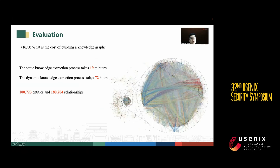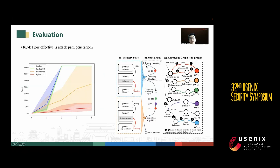Next, we measured the cost of knowledge graph construction. The static knowledge extraction process takes 19 minutes, and the dynamic knowledge extraction process takes 72 hours. We also made an evaluation of attack path generation with a demo, and evaluated the heuristics used in attack path generation. The results show those heuristics increase the efficiency of attack path generation.